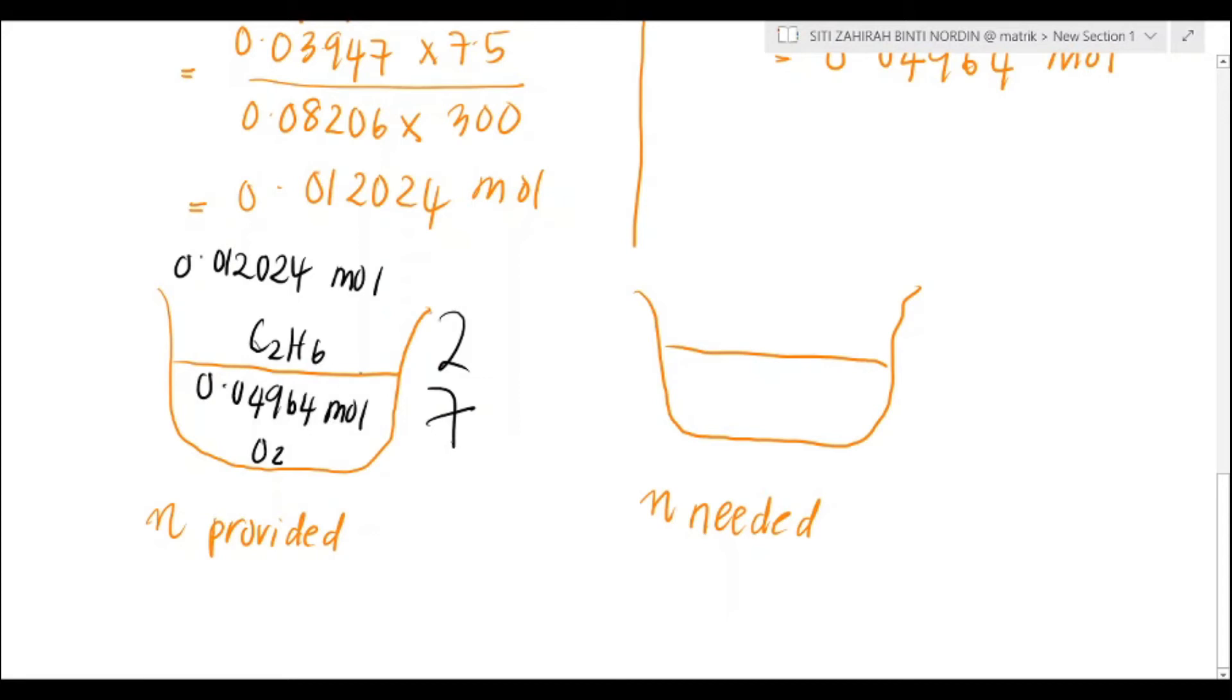Mol needed. I've already made a cross-multiplication. I've got my mol needed of C2H6 as 0.014183 mol, and my mol needed for oxygen would be 0.042084 mol. So my limiting reactant would be C2H6.